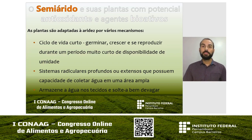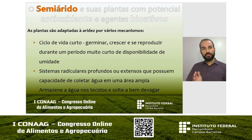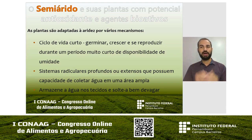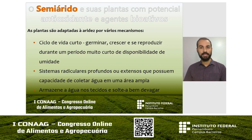Que mecanismos fazem com que essas plantas sejam adaptadas? Ciclo de vida curto, o tipo de sistema radicular, a forma de armazenamento de água são exemplos de adaptações. Com ciclo de vida curto, a planta aproveita o curto espaço de tempo com umidade no solo para germinar e chegar à reprodução, completando todo o seu ciclo produtivo em curto espaço de tempo. Os sistemas radiculares dessas plantas possuem grande capacidade de coleta de água e grande extensão.